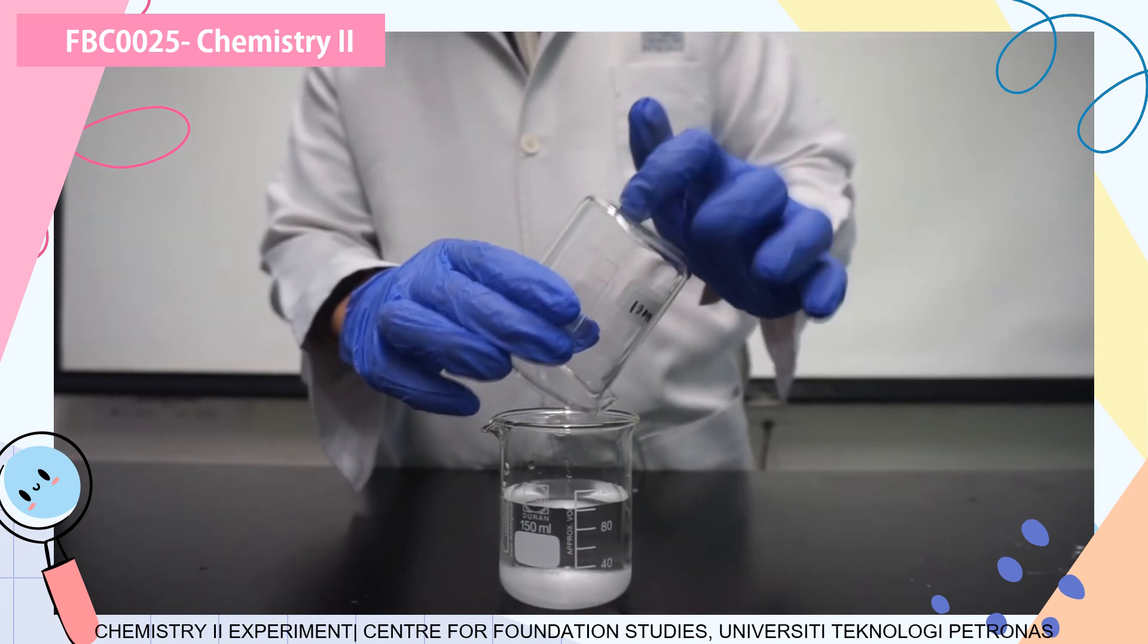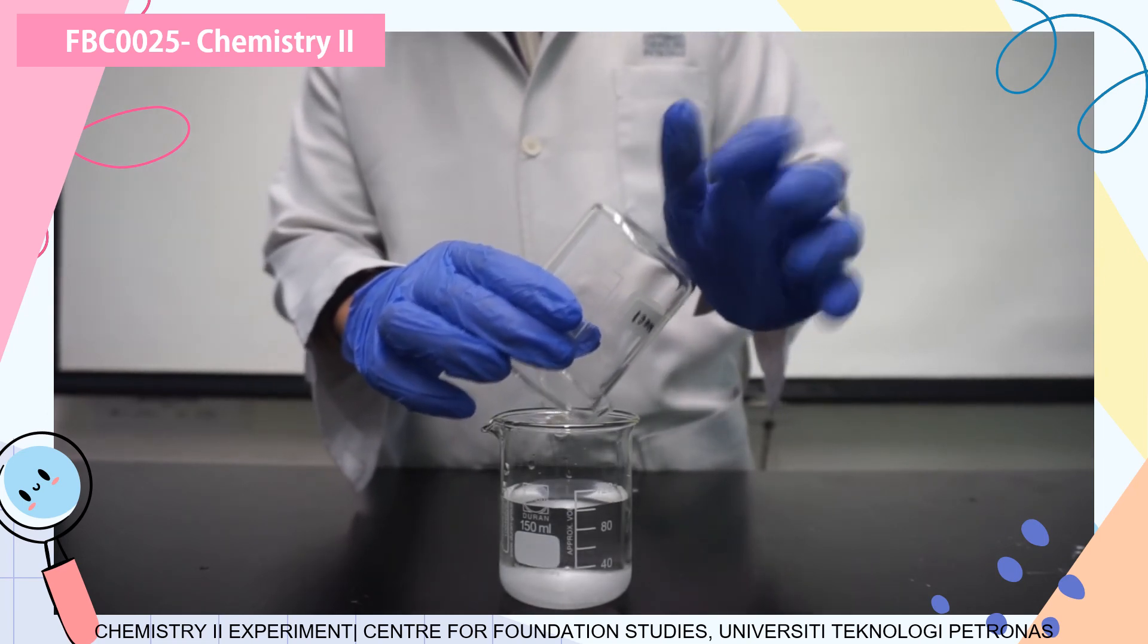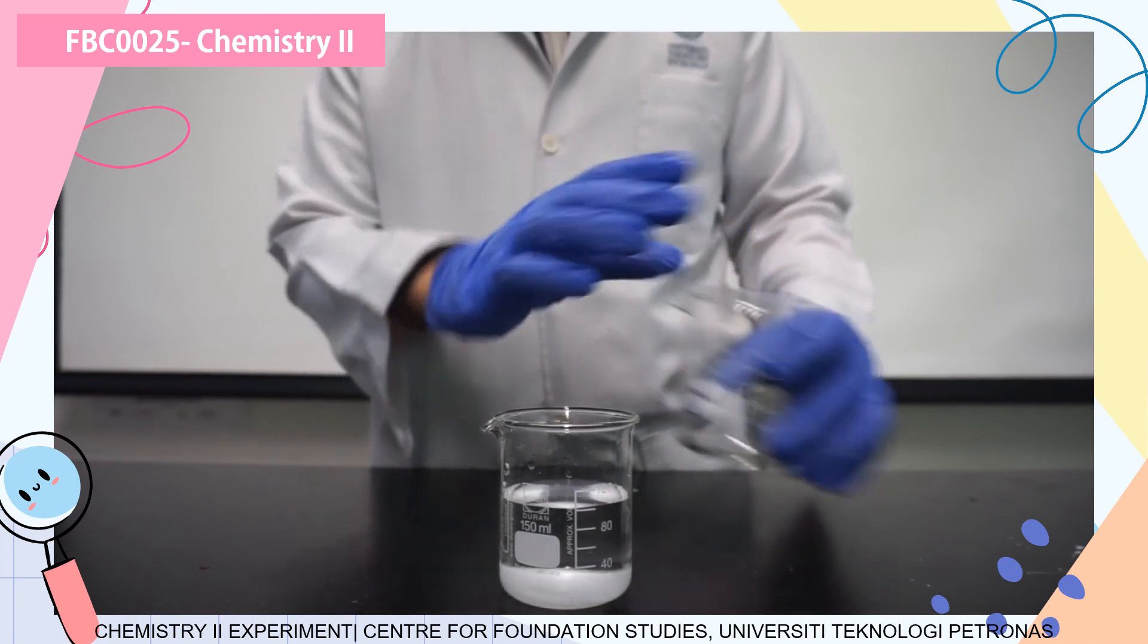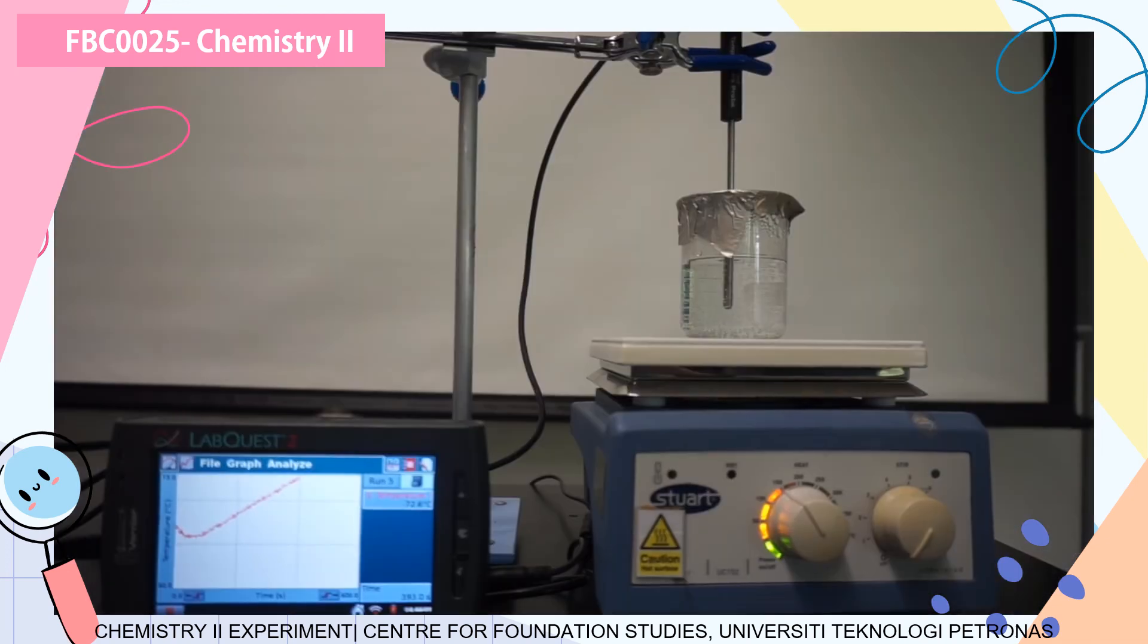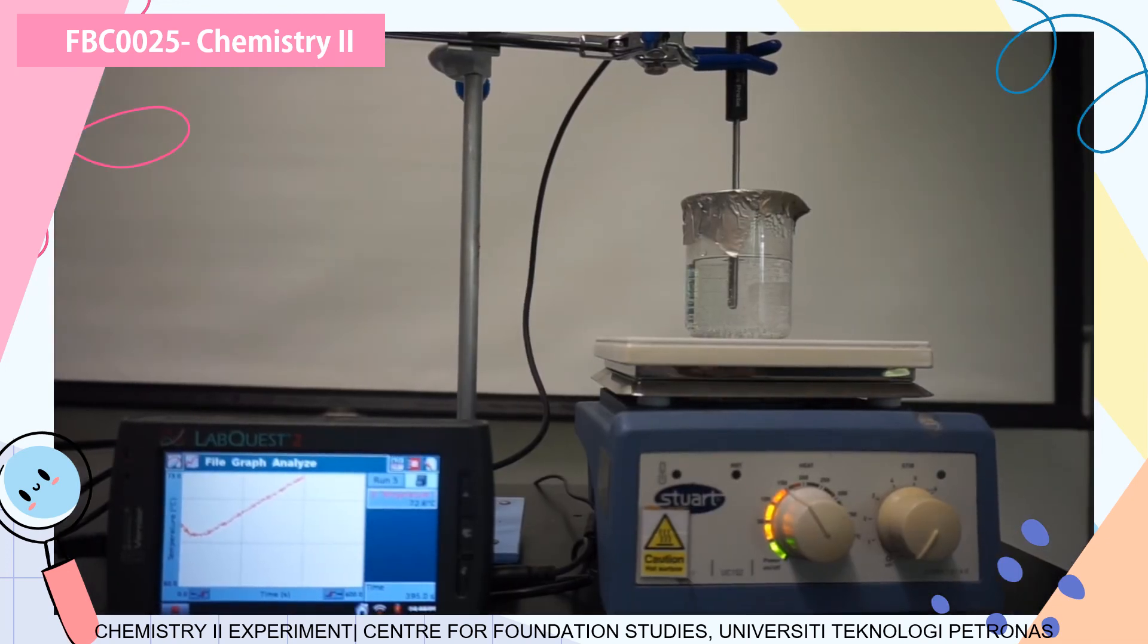After that, we are just going to repeat the same thing. Make sure it's dissolved, and then we are going to start collecting the data to determine what is the boiling temperature of the water or the solution under the presence of sodium chloride. I hope that it is clear for you and you understand how to do it.